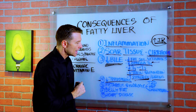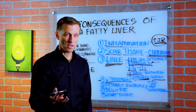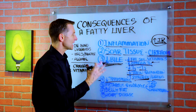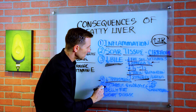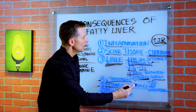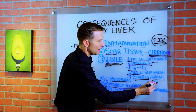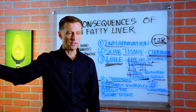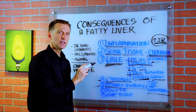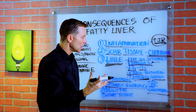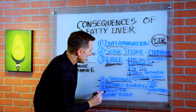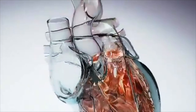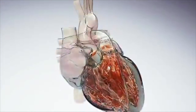Number four: a fatty liver will decrease testosterone. Some people take bioidentical hormones, but the real problem is coming from the liver. Number five: they start developing metabolic syndrome — it might be pre-diabetic or diabetic, high blood pressure, high cholesterol — and they're focused on the heart, not the liver. The liver is the cause; the heart is the effect. Belly fat is the number one indicator for a fatty liver, and heart disease, as mentioned, follows from this as well.